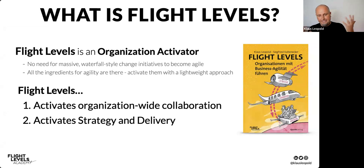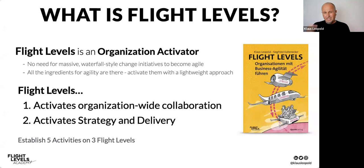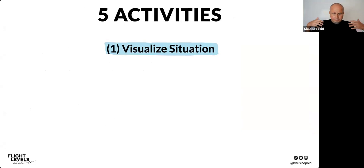When we say Flight Levels is an organizational activator, what organizations are doing is establishing five activities on three levels. Let's take a quick look at these five activities and the three levels, then we'll zoom in on the strategic level. Activity number one: organizations visualize the situation. This makes a lot of sense — the problem in knowledge work is that our work is not visible.